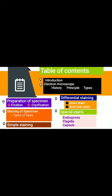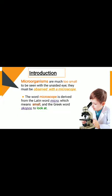Here is the table of contents, which includes: introduction, electron microscope — its history, principle, and types. Next, preparation of specimen, categorized into fixation and cryo-fixation. Next, staining of specimen, which includes types of dyes, simple staining, differential staining — gram stain and acid-fast stain — and special stains including endospore, flagella, and capsule staining.